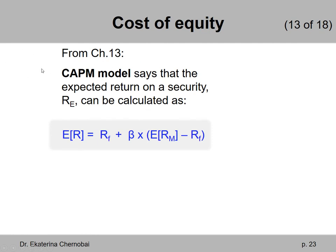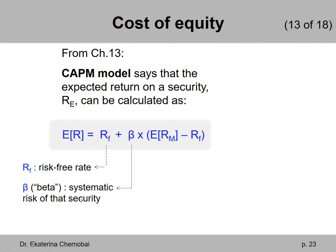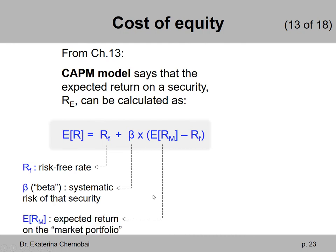From chapter 13, to calculate the return on a stock investment, we take the risk-free rate, RF, and then add the beta for the stock — the measure of the stock's systematic risk — multiplied by the difference between the expected return on the market portfolio and the risk-free rate, RF. So you need to know three things: the risk-free rate, the beta or measure of systematic risk for that stock, and the expected return on the market portfolio — completely different from the three things the dividend growth model requires.